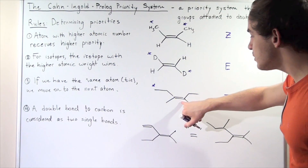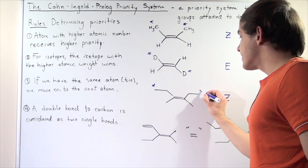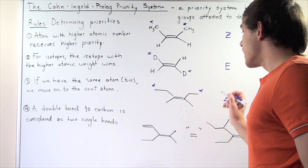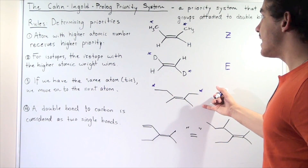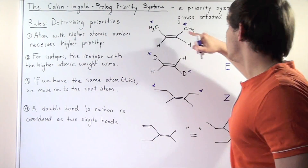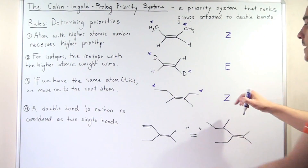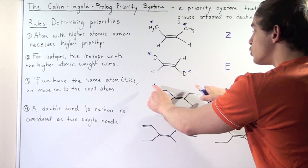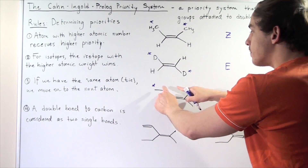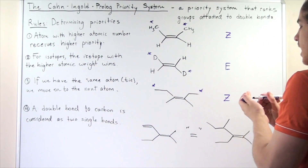Likewise, for the second carbon we have the same situation. As in the first example, we have the Z isomer because the two higher priority groups are on the same side of the double bond.